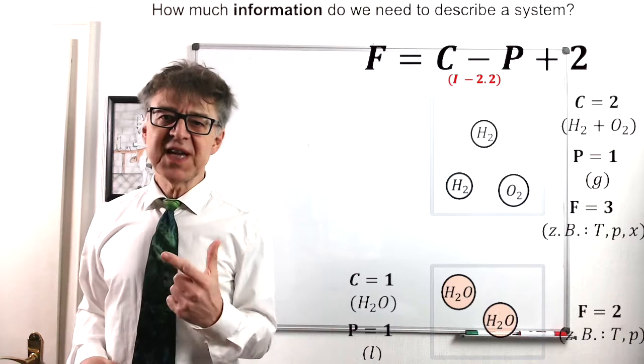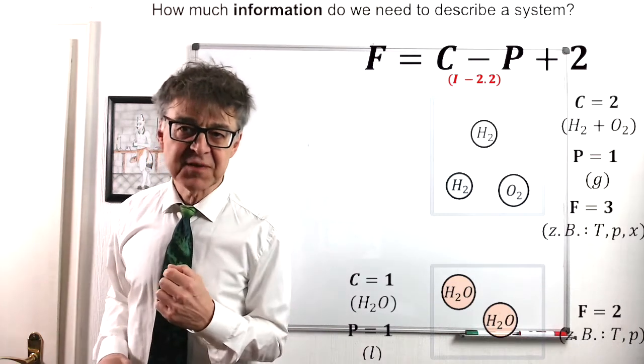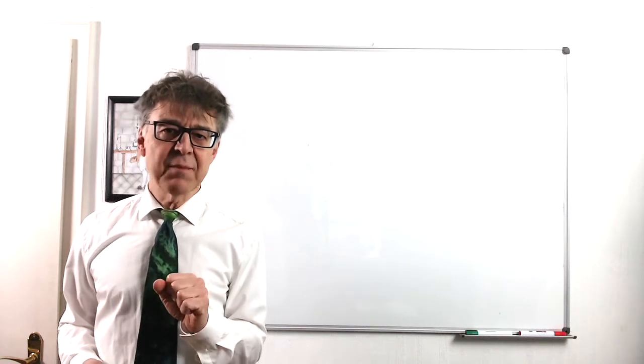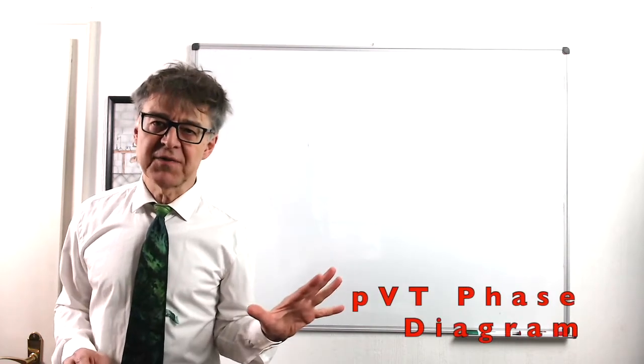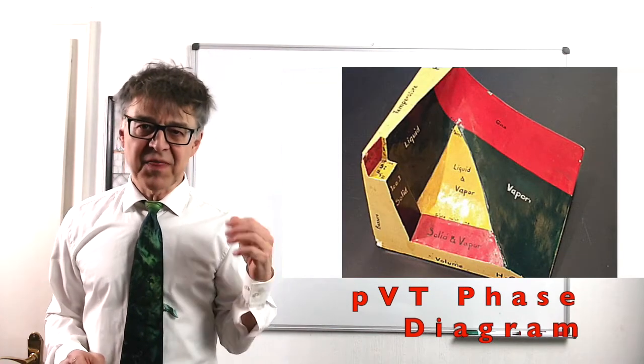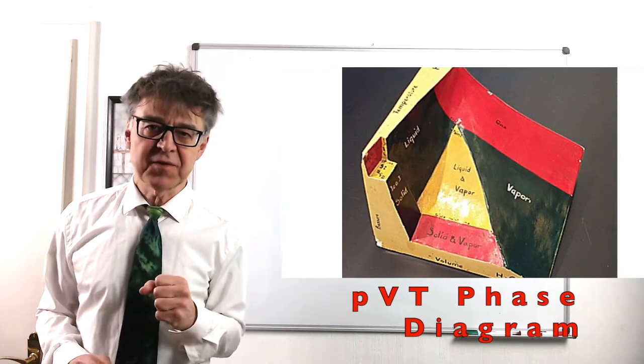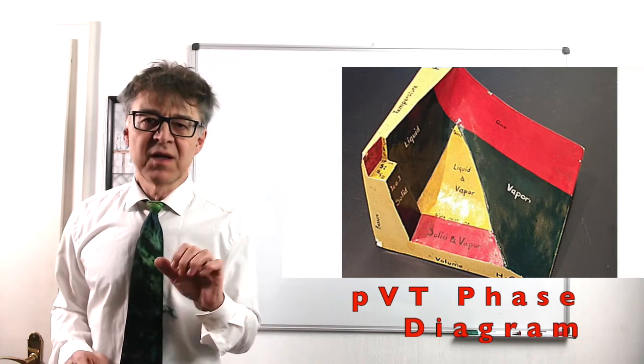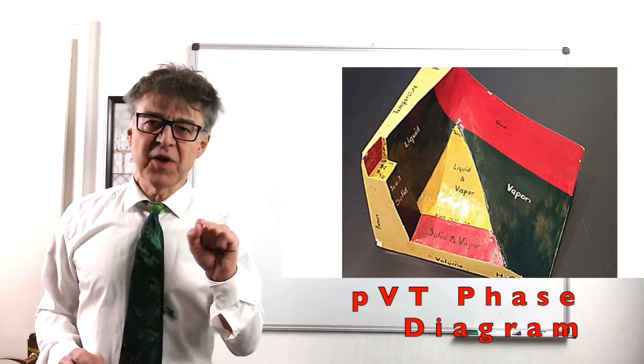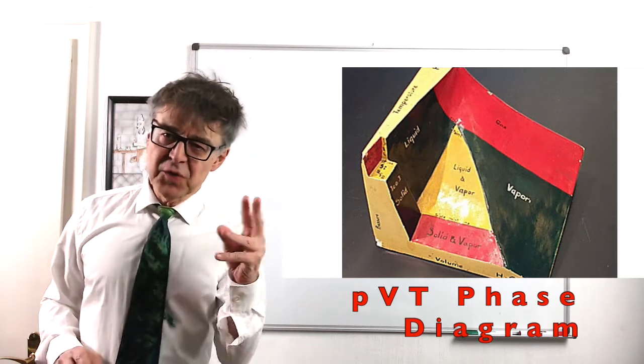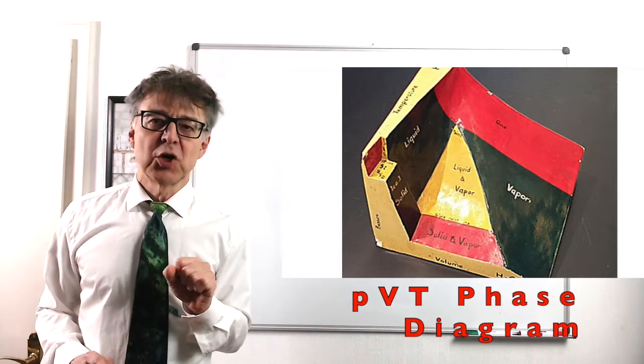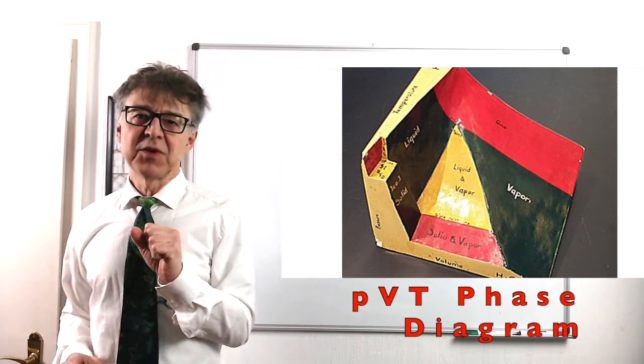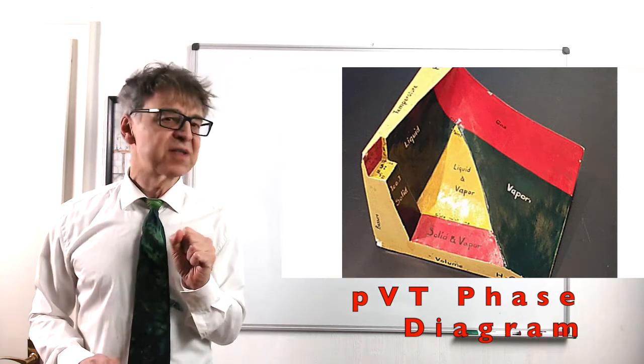Since two state variables are sufficient to specify all possible states of a pure substance, all of these states can be represented on a two-dimensional surface. And here it is. This surface in PVT space, the so-called phase diagram of a one component system. The surface is sometimes more and sometimes less curved. There are discontinuities and interesting points and lines which we will discuss later. It is intended to be another leitmotiv through most of this series of lectures.